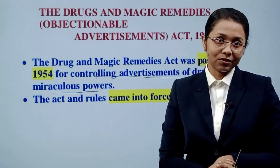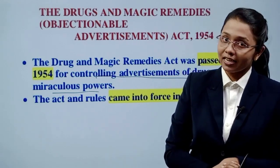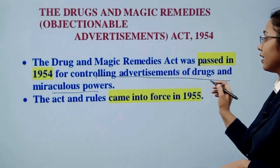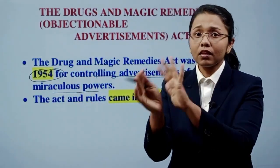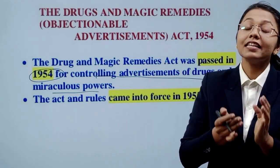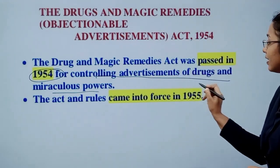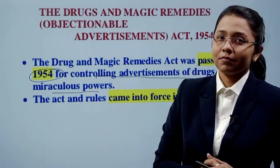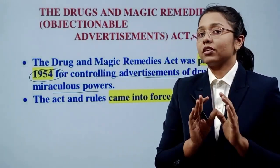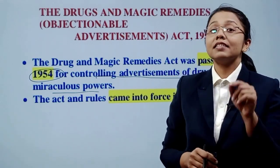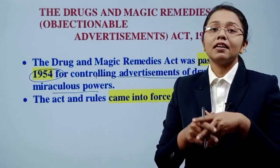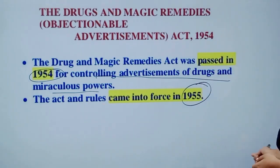This is the Drug and Magic Remedies Act — also called the Objectionable Advertisement Act. For MCQ level, note the important dates: it was passed by Parliament in 1954, and it came into force in 1955. So if you are given options 1954 and 1955, remember: enacted means 1955 and passed means 1954.